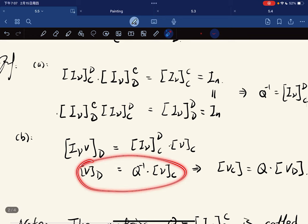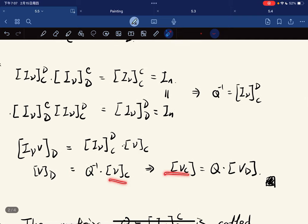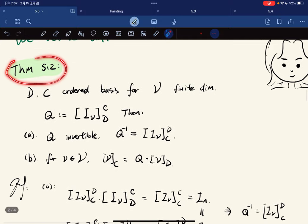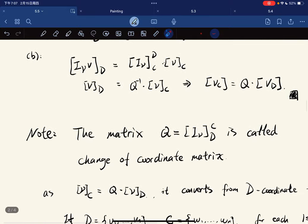So we have this is true. Now we multiply Q on both sides, so we got [v]_C is equal to Q times [v]_D as desired. We have proven this theorem.